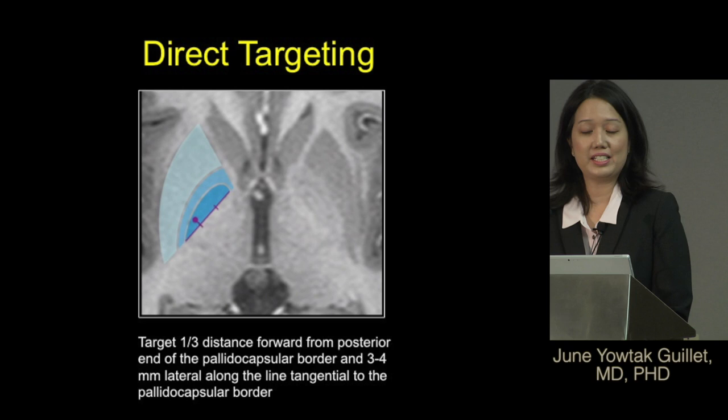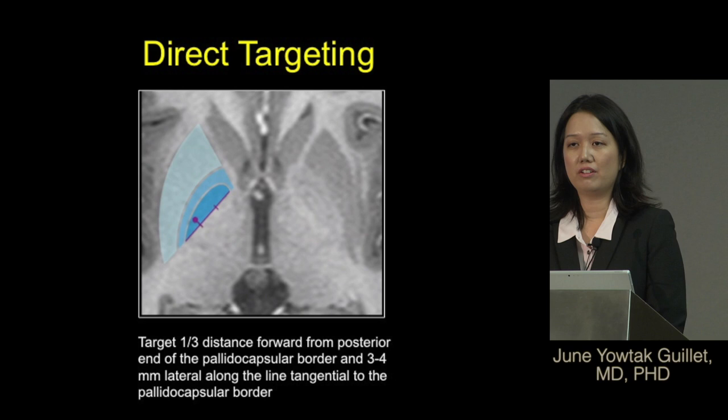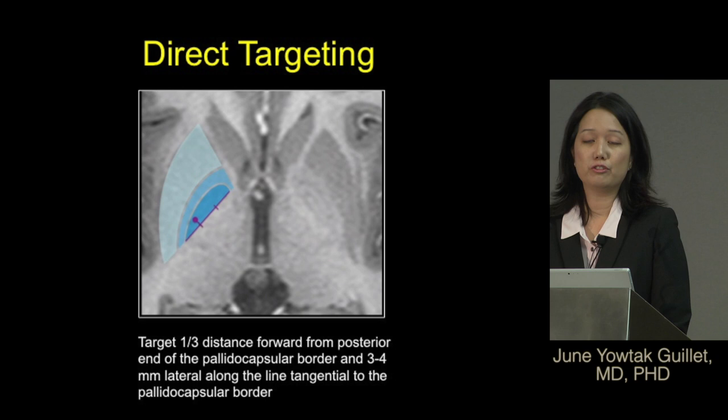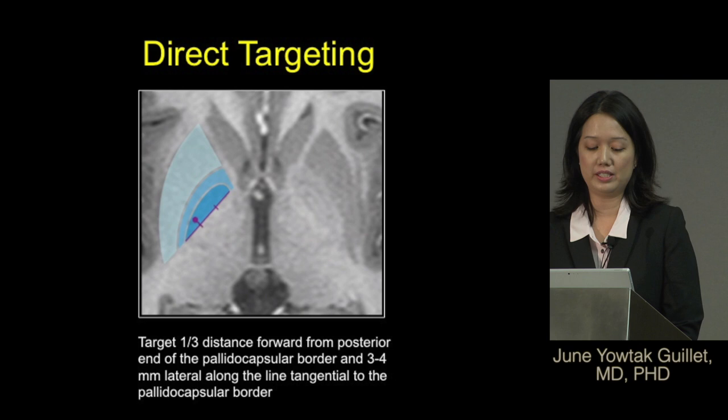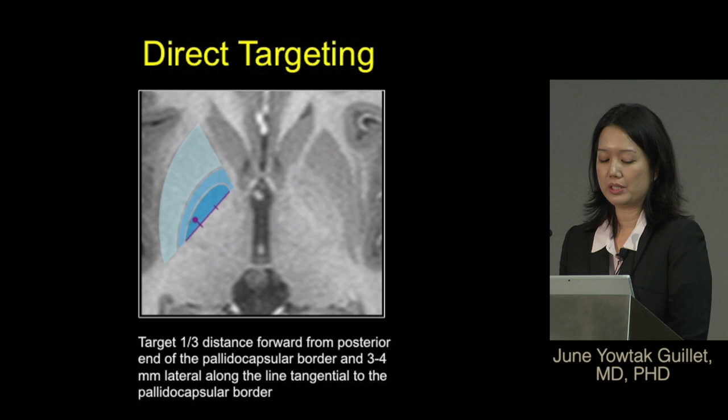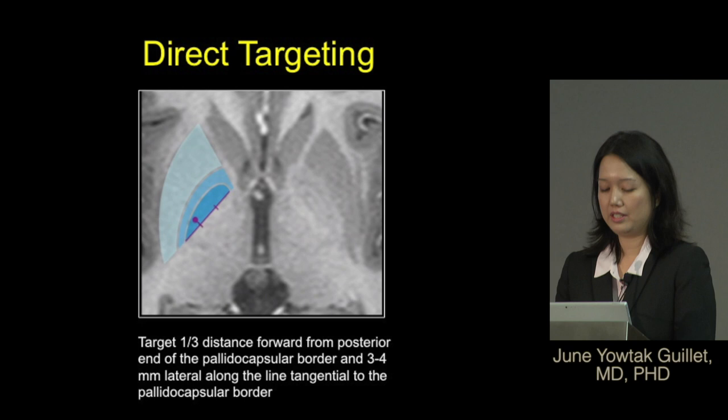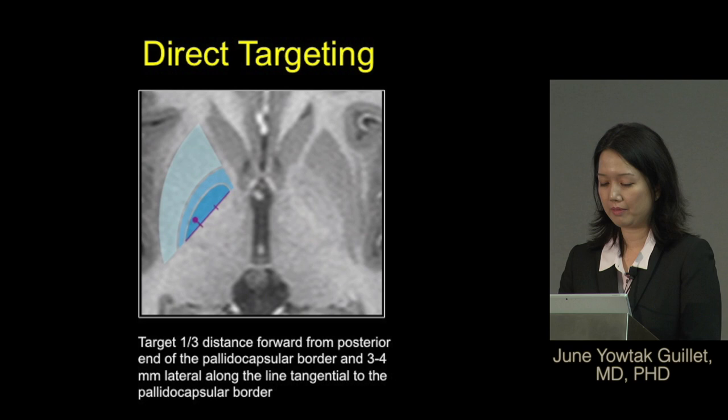For direct targeting, we have the advantage of modern MRI, which can clearly show very small brain structures. You can essentially point and shoot — directly visualizing and selecting the target area. The specific part targeted is the postero-lateral part of the GPI, which has been found to provide the most benefit and is where we want to place the electrode.